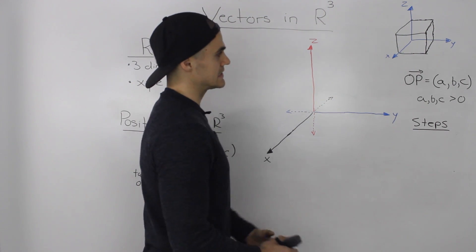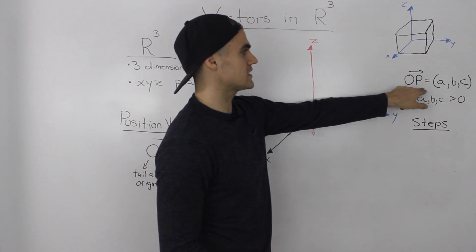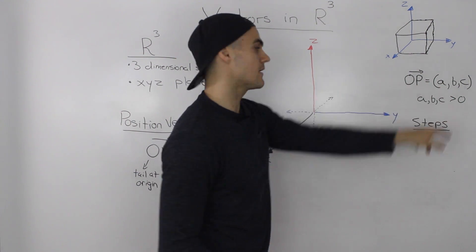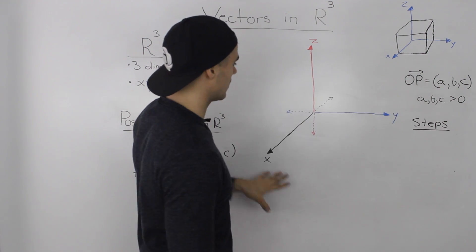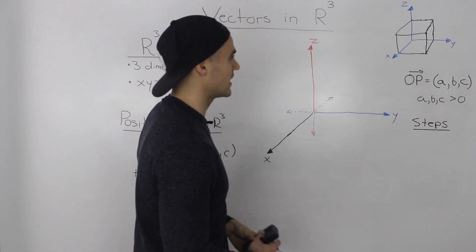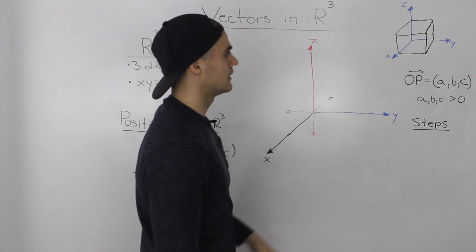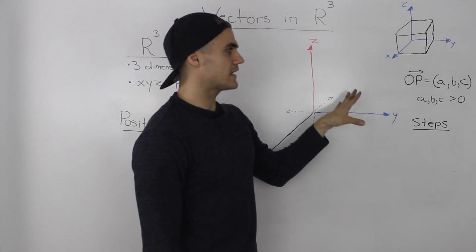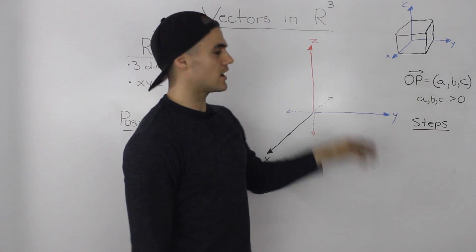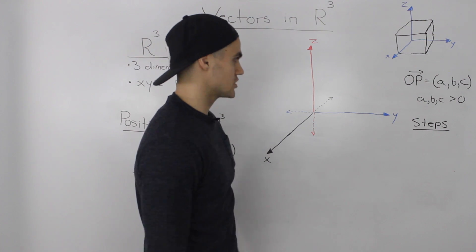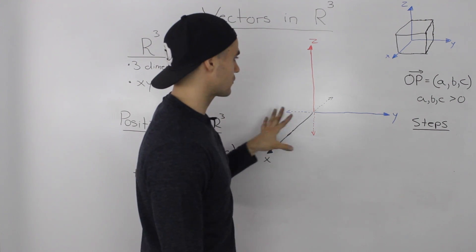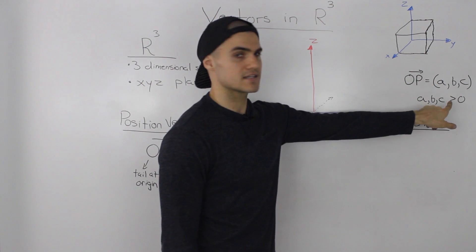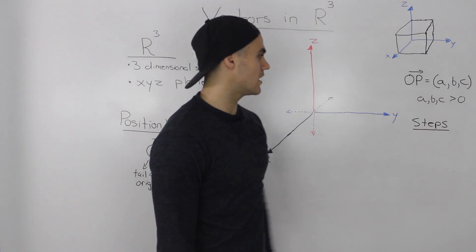Now I'm going to take this general vector OP equals (a, b, c) and graph it on this xyz plane. Now a, b, and c can be any number — positive or negative, and any combination. However, for this example, we're just going to assume that a, b, and c are positive.